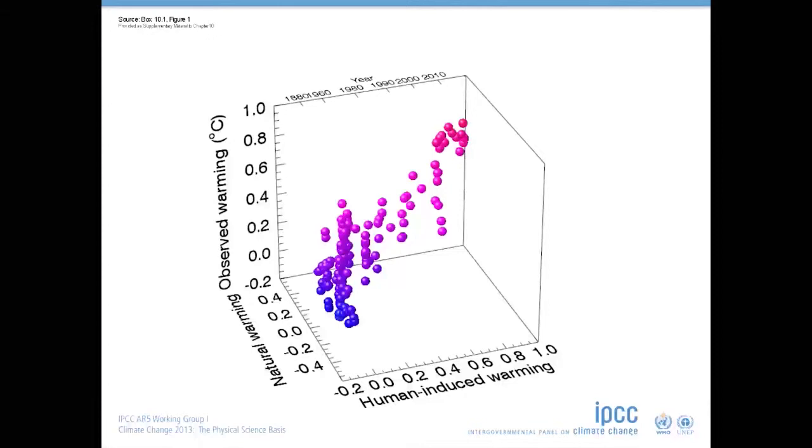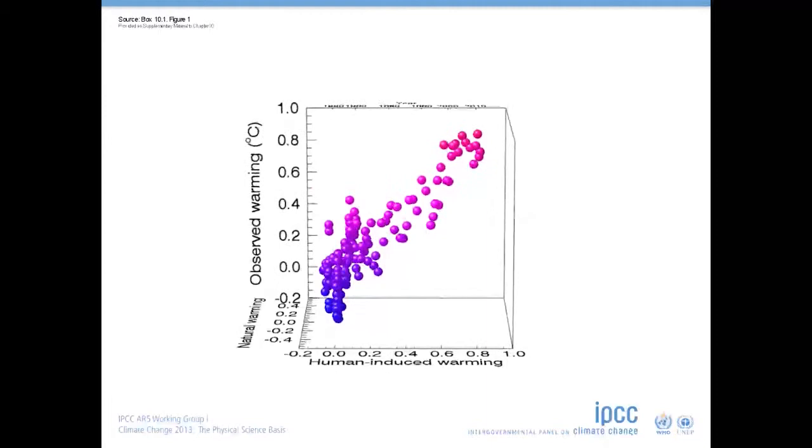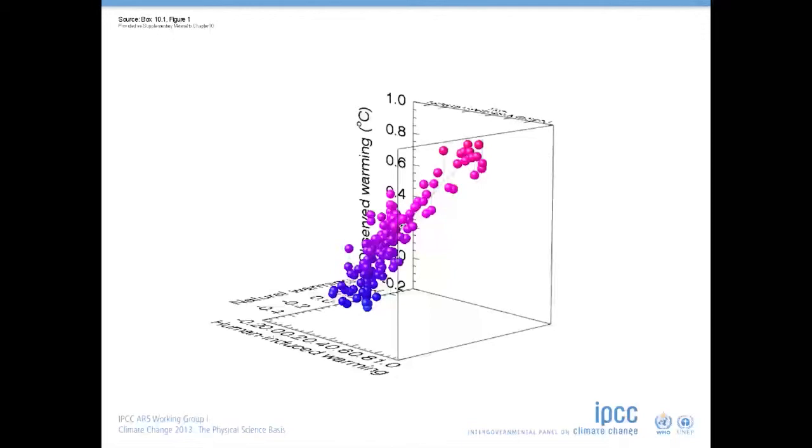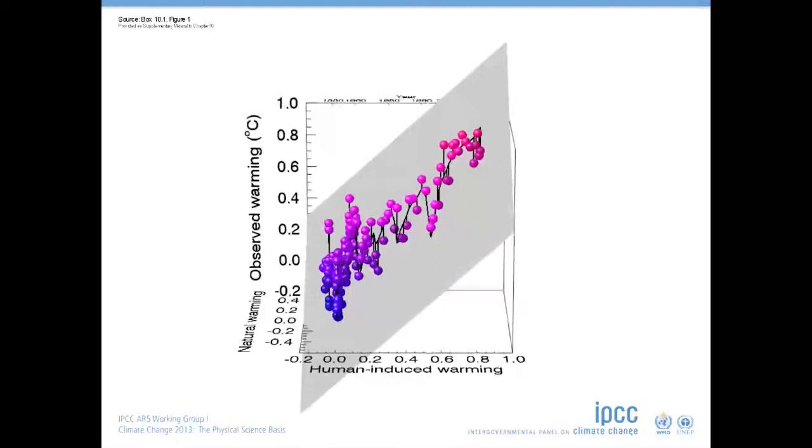To estimate the size of this role, we rotate this around and find that it is not just a random cloud, but the points all lie close to a sloping surface like this. The slope of this surface tells us the most likely size of both human induced warming and natural fluctuations in the observed temperatures.